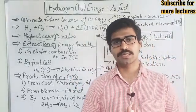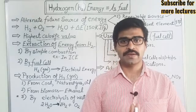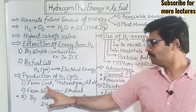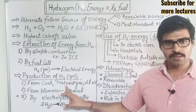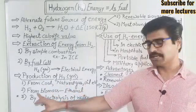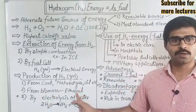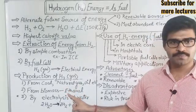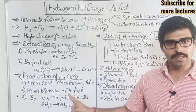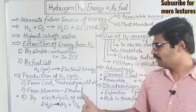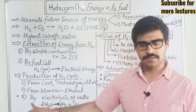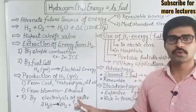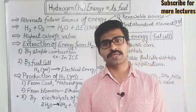Now, the production of hydrogen gas — how we can produce it. We have different methods for the production of hydrogen gas. The first is from coal, natural gas, or oil. The second is from biomass, for example ethanol. We call ethanol a biomass product because ethanol is a byproduct of fermentation, easily obtained from sugarcane bagasse and other biomass products.